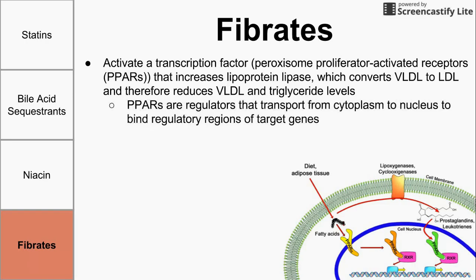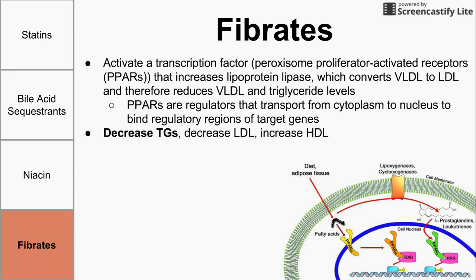This is done through a transcription factor called PPAR, which is a regulator that transports from the cytoplasm to the nucleus to bind regulatory regions of target genes. In the case of fibrates, you're activating a PPAR that transports from the cytoplasm to the nucleus to bind an activating region of the lipoprotein lipase gene, increasing its production. The net effect is to decrease triacylglycerides, decrease LDL, and increase HDL — all good things.